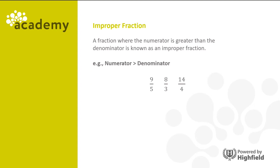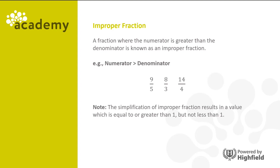The fraction where the numerator is greater than the denominator is known as an improper fraction. Examples include nine fifths, eight thirds, and fourteen quarters. It's worth noting that simplification of an improper fraction results in a value which is equal to or greater than one, but not less than one.